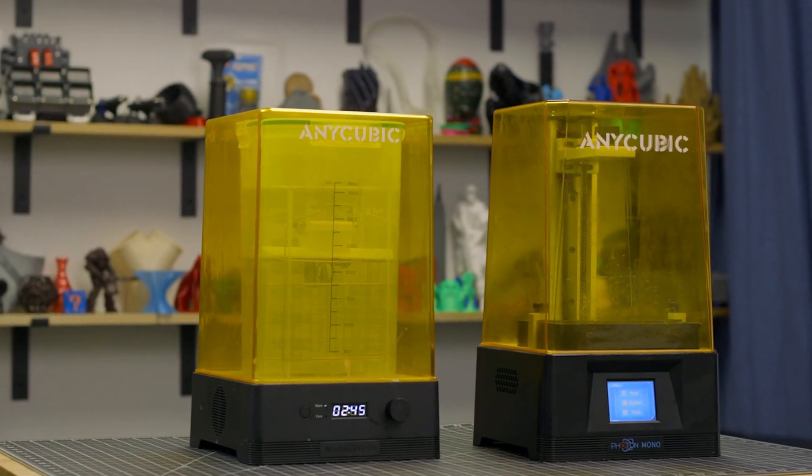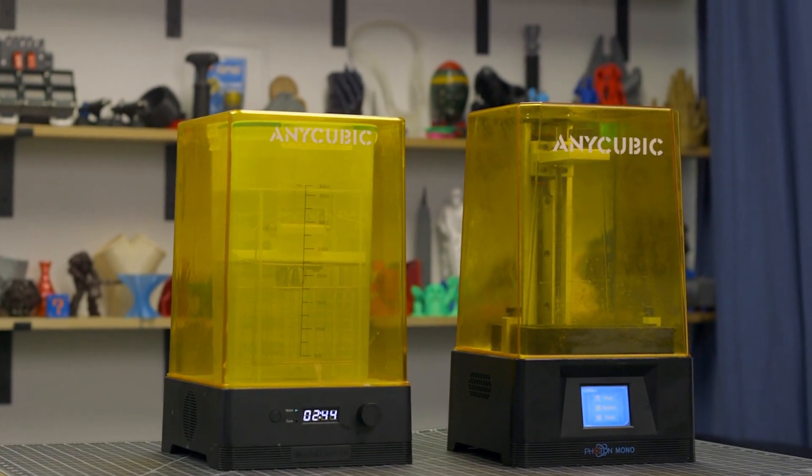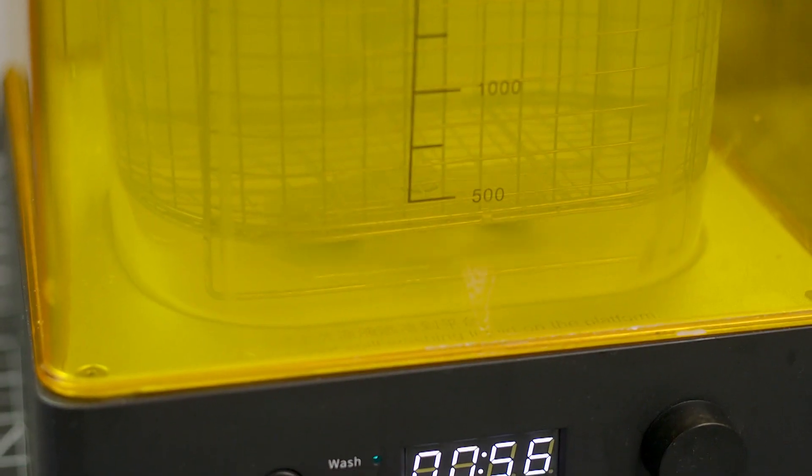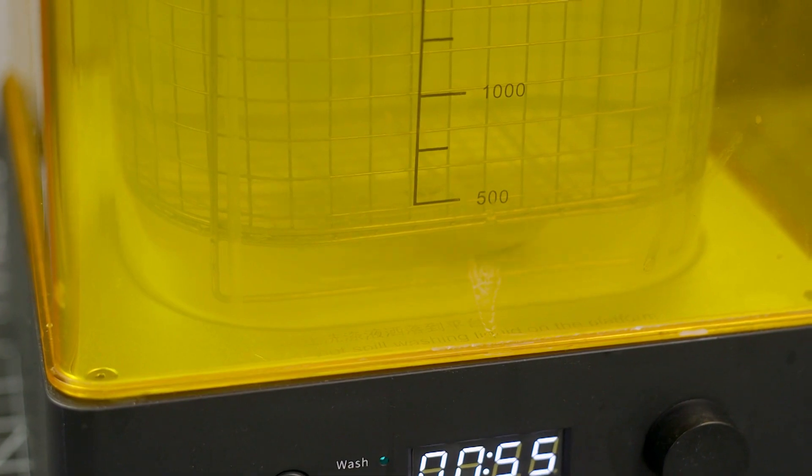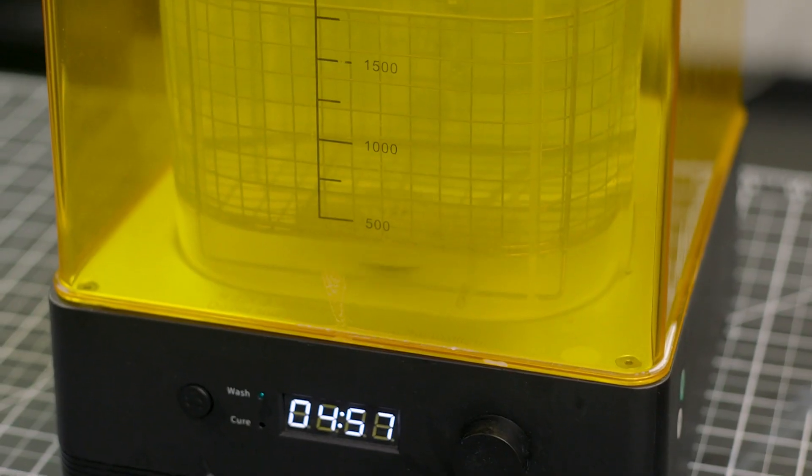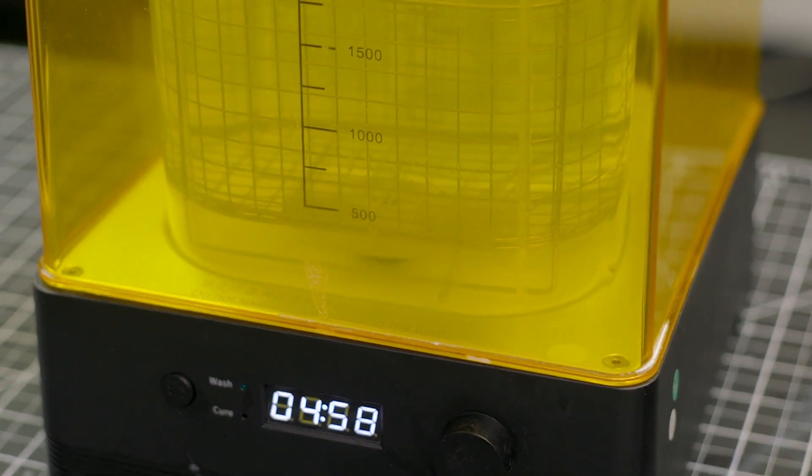Using the Anycubic Wash and Cure Station automates and simplifies the inevitable curing process. The wash station has a built-in propeller to stir the alcohol while the print sits in the wire basket. Or even more conveniently, the entire build plate can be washed with it. Over the course of its cycle, the propeller will alternate directions to swirl isopropyl alcohol all around the 3D print.